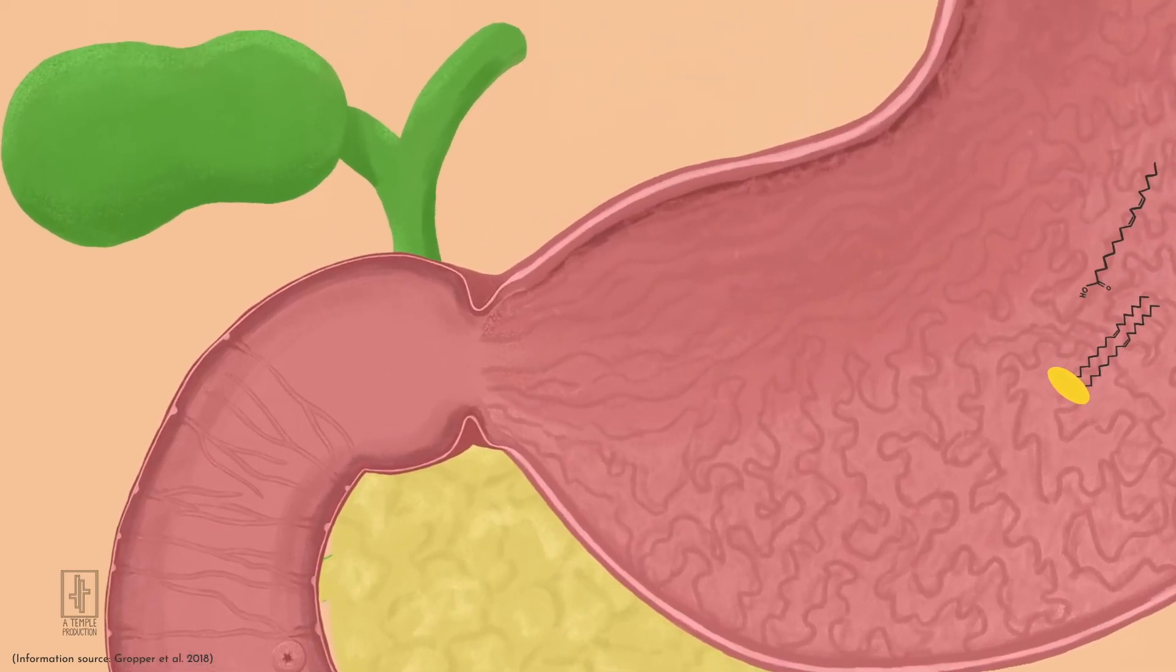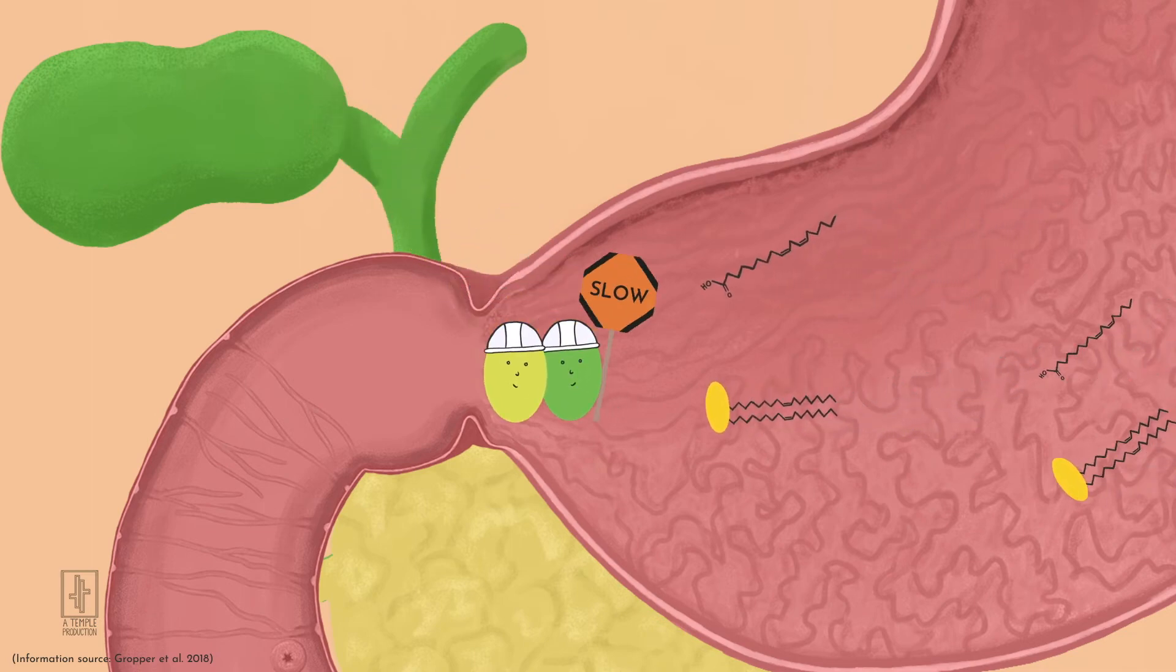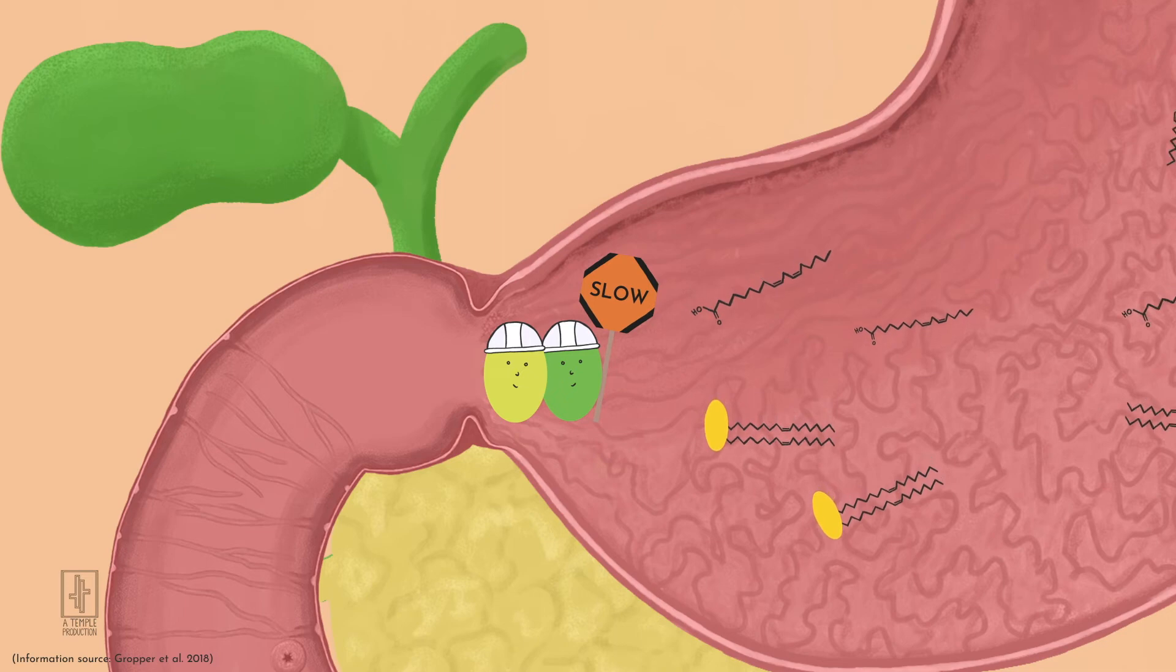Two hormones, CCK and secretin, are released which slow the emptying of the stomach into the small intestine. This is why higher fat meals stay in your stomach longer and keep you full longer.